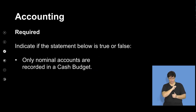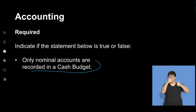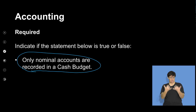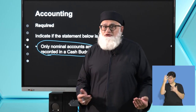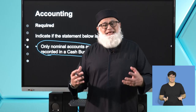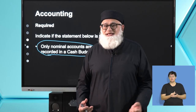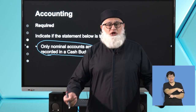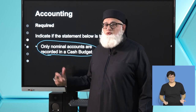Statement two: a projected income statement would reflect the expected profit or loss for the budget period. Looking at the terminology, a projected income statement would definitely reflect your profit or loss for the budget period — true. Statement three: only nominal accounts are recorded in the cash budget. This is false, because in a cash budget you could have the purchase of land and buildings, which is an asset account, not a nominal account.